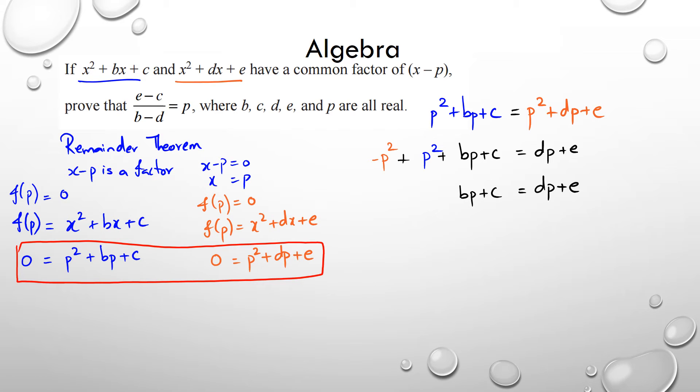And from this point, I need to rearrange so that p is by itself. So I have bp minus dp equals e minus c. p is a common factor, which means b minus d times p equals e minus c. And so finally, I have p equals e minus c divided by b minus d. And that's how you prove this particular equation.